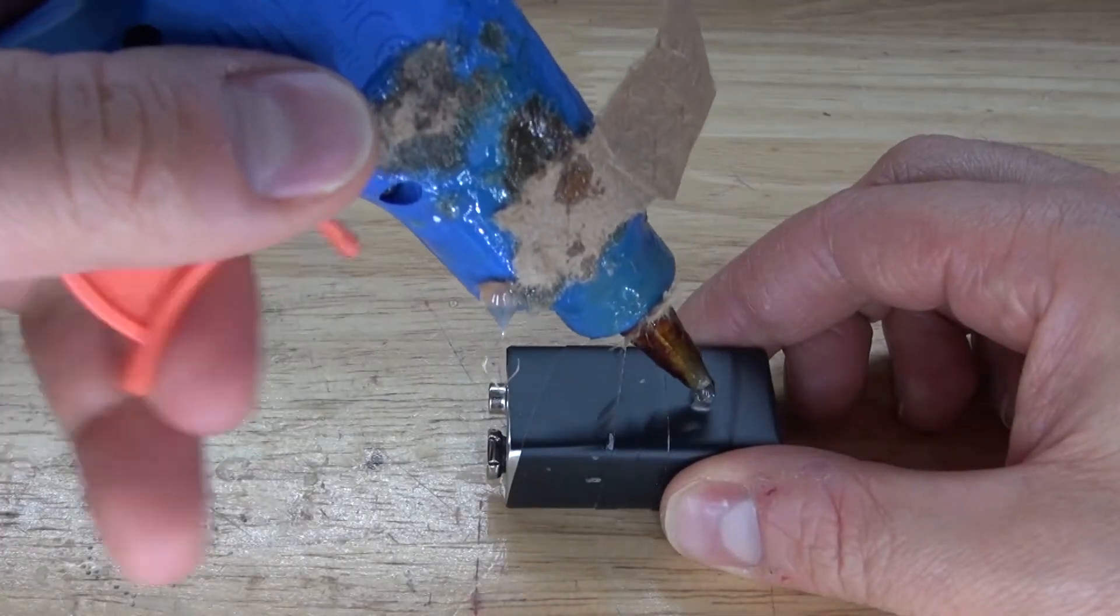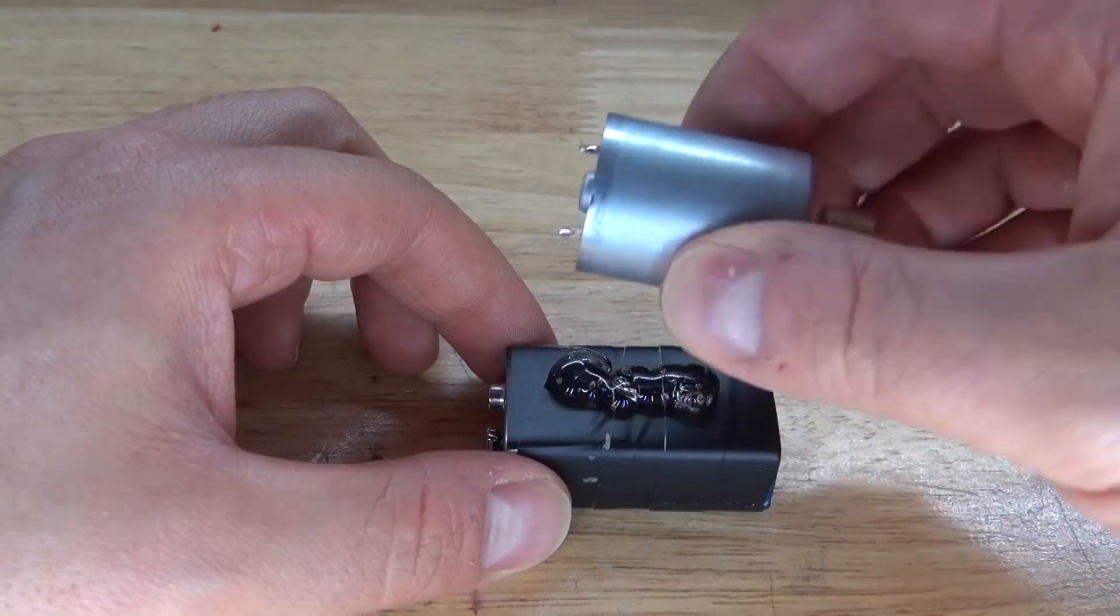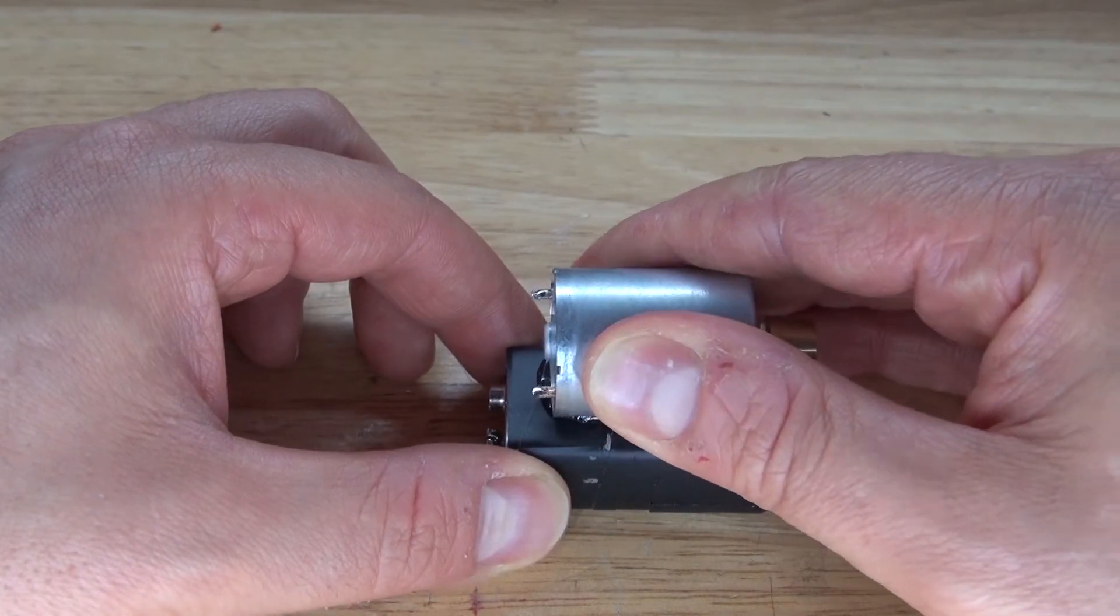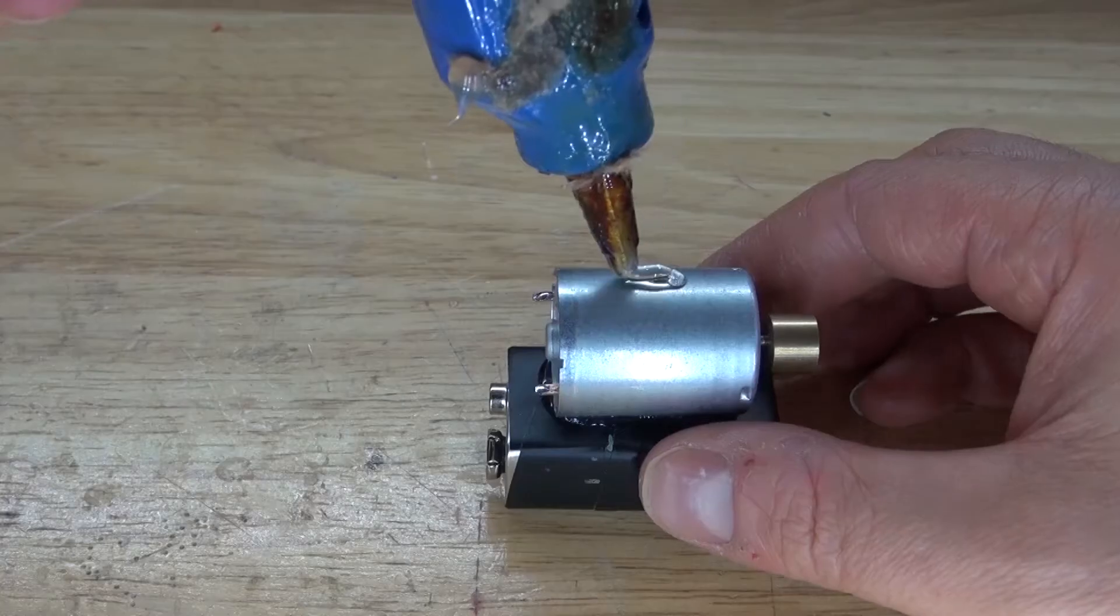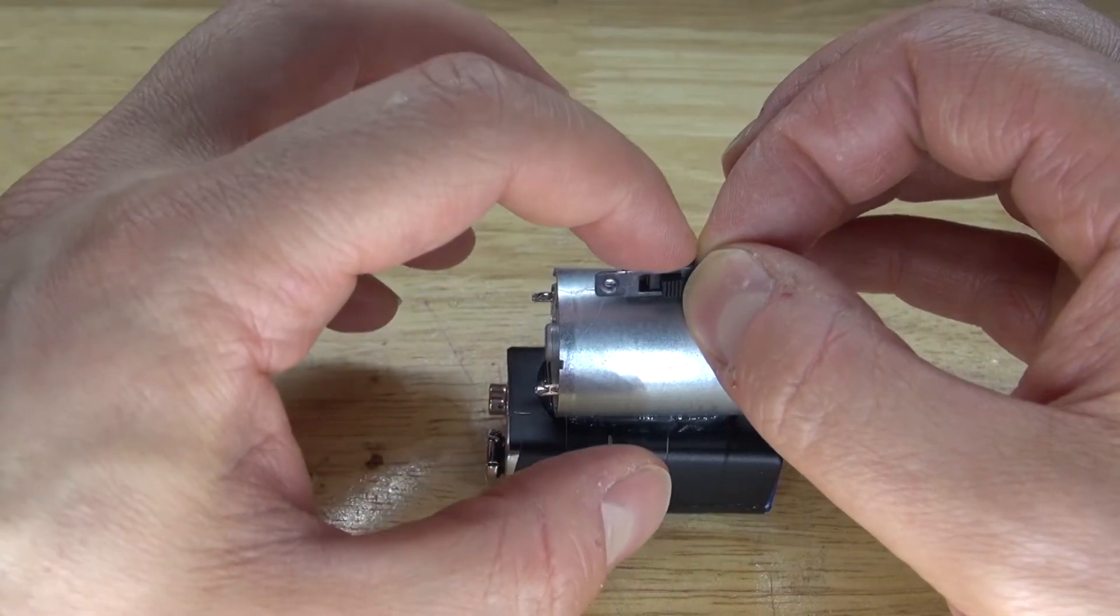First, I'm going to take some hot glue and place it onto the 9-volt battery. Take the vibrating DC motor and place it onto the 9-volt battery. Glue it into place. Next, take some hot glue and put on the vibrating DC motor. And glue down the slide switch.